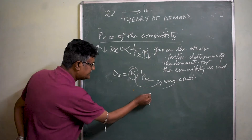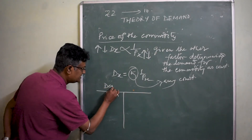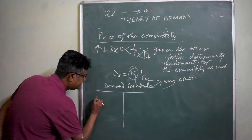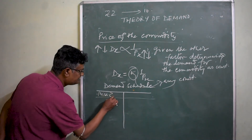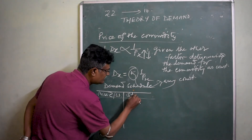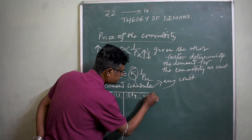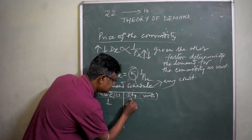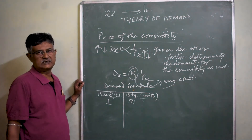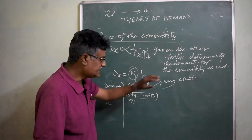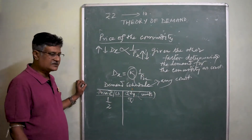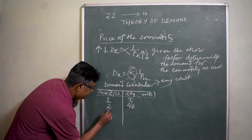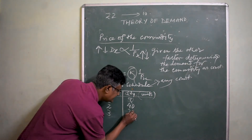Let us take a demand schedule for commodity X. Here we are measuring price in rupees per unit and quantity demanded in units. When the price is rupee 1, the consumer is willing to buy 50 units of the commodity. Now, other things remaining the same, if the price rises from rupee 1 to rupee 2, the quantity demanded falls to 40 units. Again, when the price rises to rupee 3, the quantity demanded is 30 units.